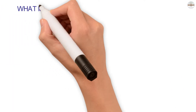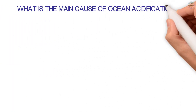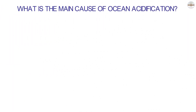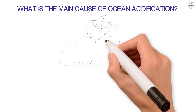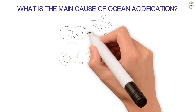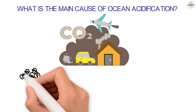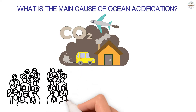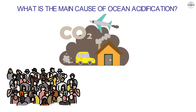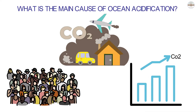What is the main cause of ocean acidification? The main reason the ocean is more acidic is that there is too much carbon dioxide in the air. Most of the carbon dioxide in the air comes from people. Deforestation and the burning of fossil fuels are the most common ways CO2 levels rise.